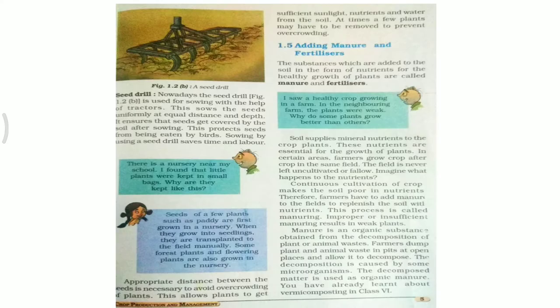So, adding manure and fertilizers. I saw a healthy crop growing in a farm. In the neighboring farm, the plants were weak. Why do some plants grow better than others?